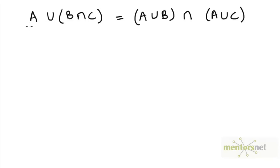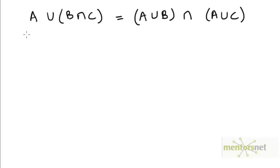Let's try to prove that A union (B intersection C) is equal to (A union B) intersection (A union C). This is the first of the distributive laws that we saw in the previous video. So how do we go about proving that this set is equal to this set?